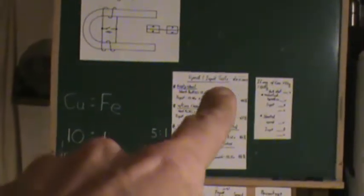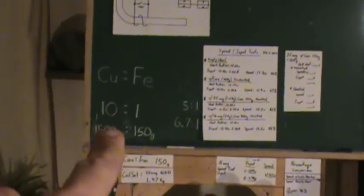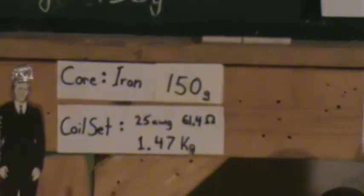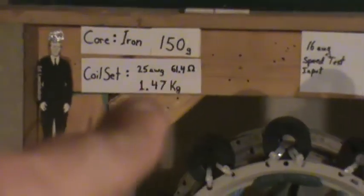Basically we're continuing the same thing, but this time we have a smaller core - it's half the iron. This coil set is 25 gauge, one and a half kilos.